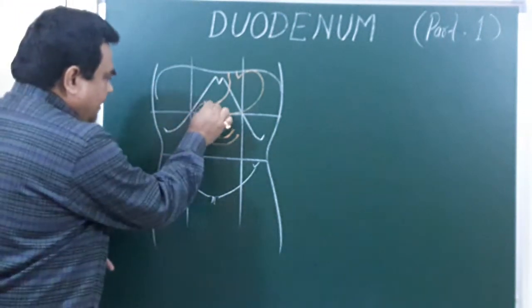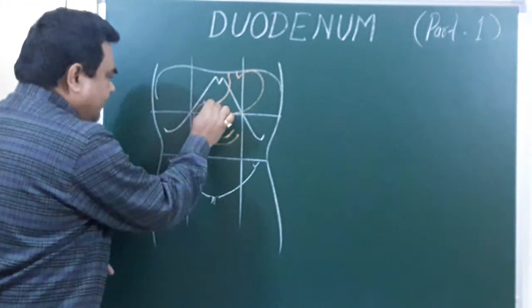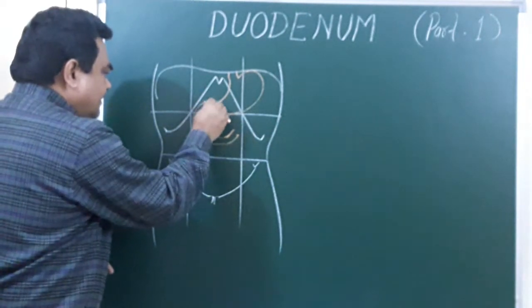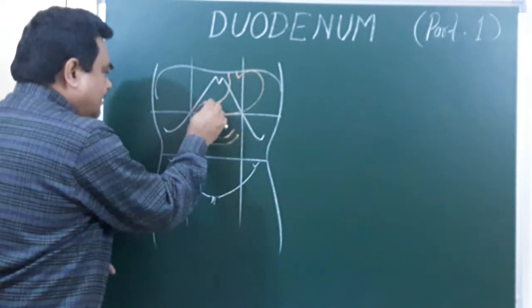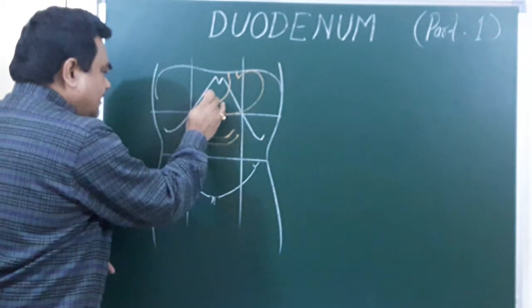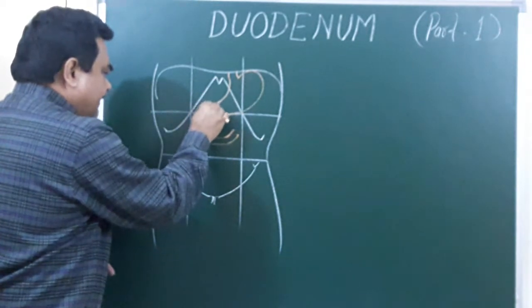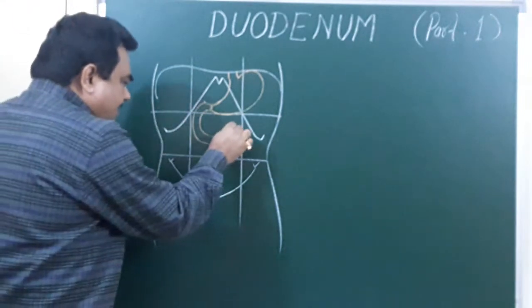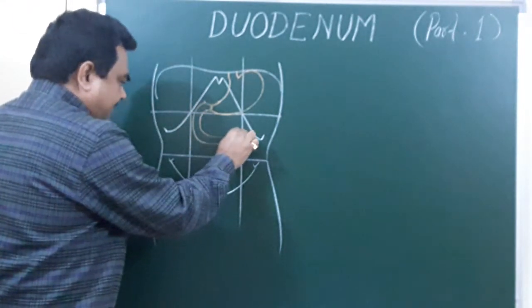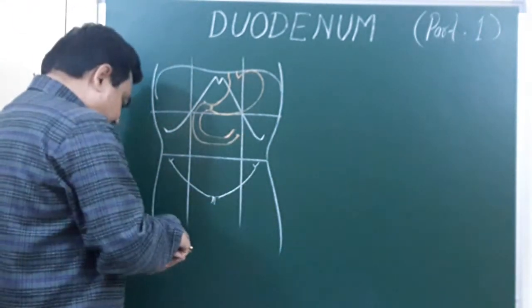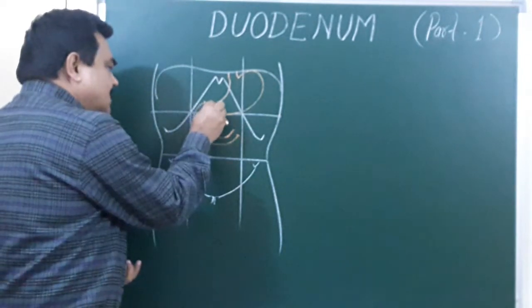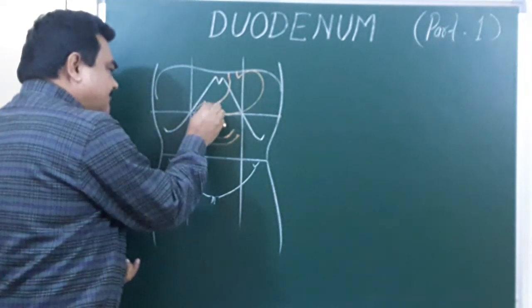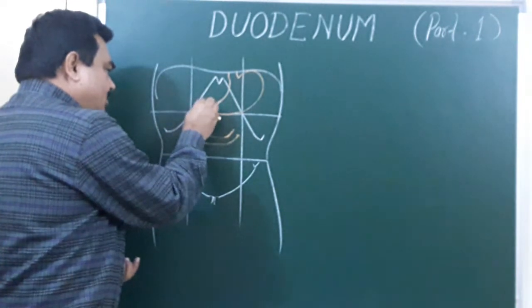Here is the junction of the duodenum — the pyloric junction. This is the pylorus of the stomach, and this is the first part of the duodenum.